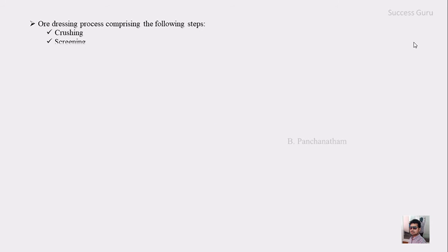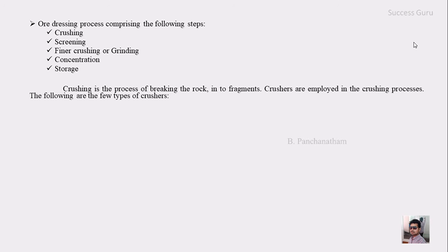The first heading is the ore dressing process. The following are the five main steps involved: the first one is crushing, followed by screening, then fine crushing or grinding, then concentration, then storage. In our previous class we had discussed a few of the properties of minerals involved in ore dressing, and all such things come under these five main processes.